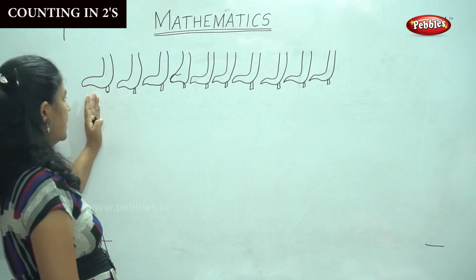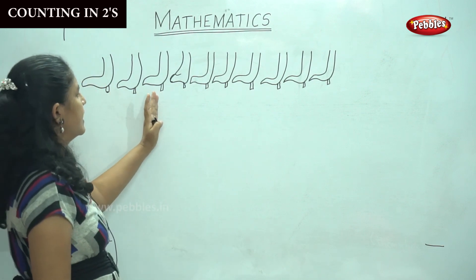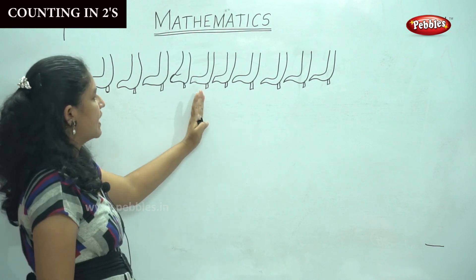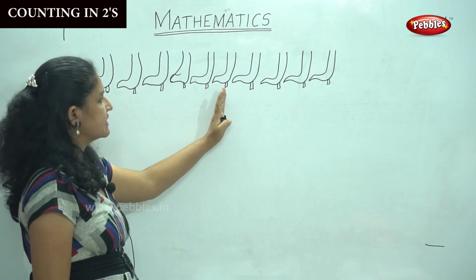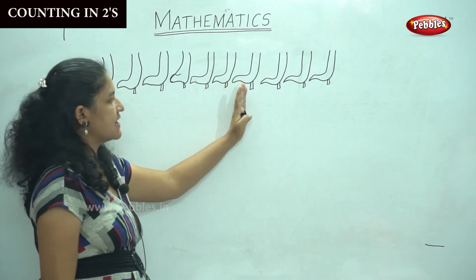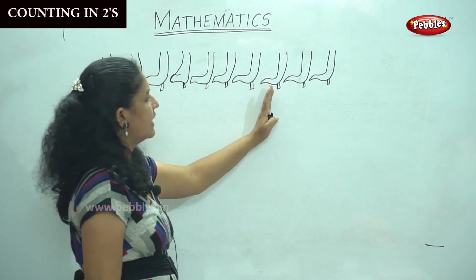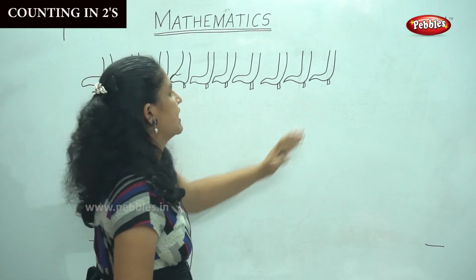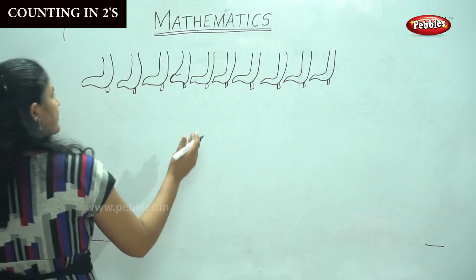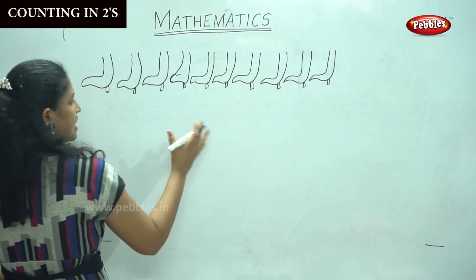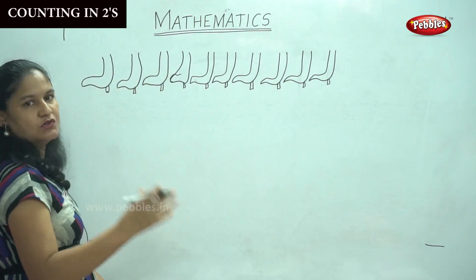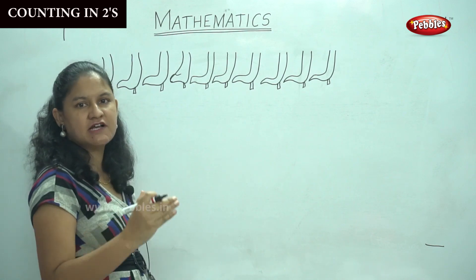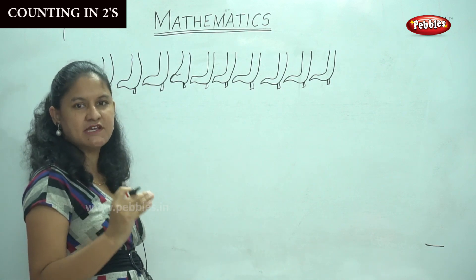One, two, three, four, five, six, seven, eight, nine, ten. So shall we write the number down below the shoes so it will be easy for us to count in twos.